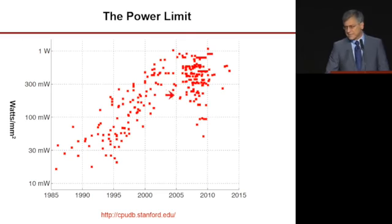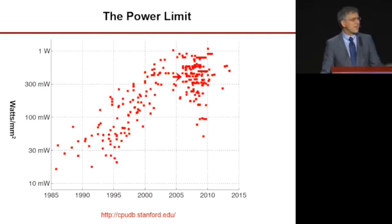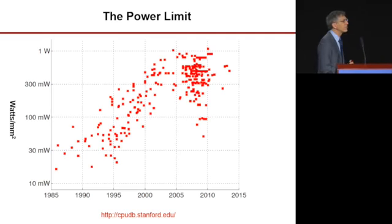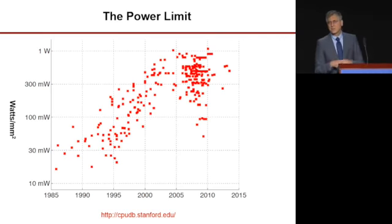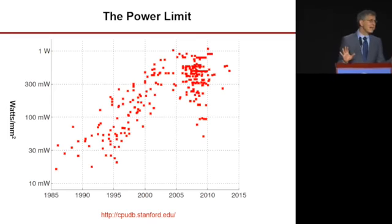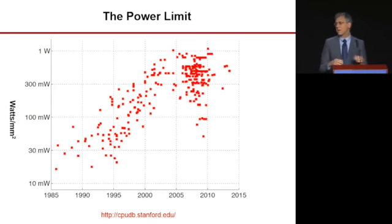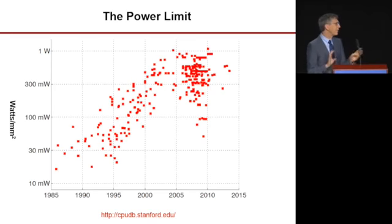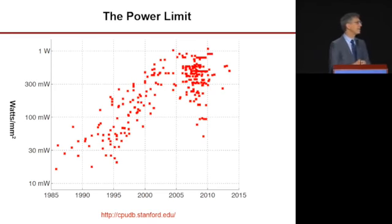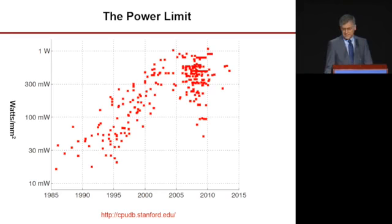Sometime in the mid-2000s we really hit a power limit and were no longer able to scale up power because of various thermal issues. In the desktop and server community that happens around 100 watts; in laptops it's about 30 watts; and in a cell phone it's somewhere between one and three watts. All of our computing systems are now power limited.